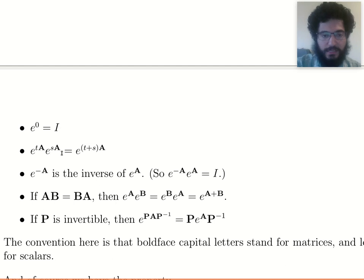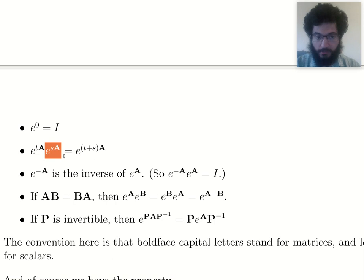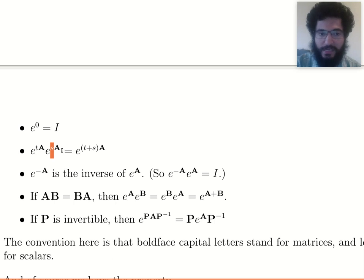And there's a nice interpretation for this. If you interpret e to the SA as the matrix that, when you apply it to an initial condition, flows it along by amount of time S in the phase space, and this flows points along by an amount of time T, then when you apply this and then this, then together this should flow you along by amount of time S, and then further along by amount of time T. So it flows you along by time T plus S.